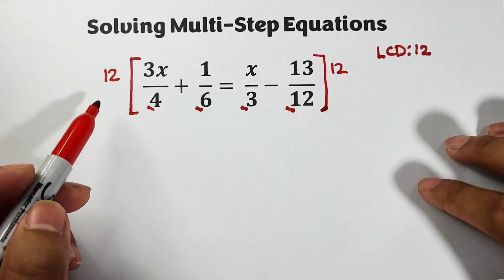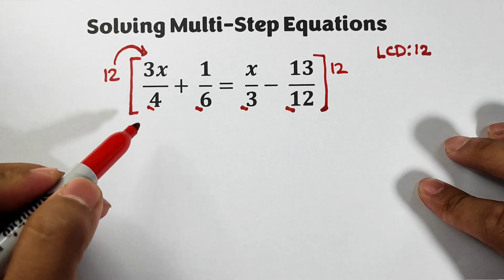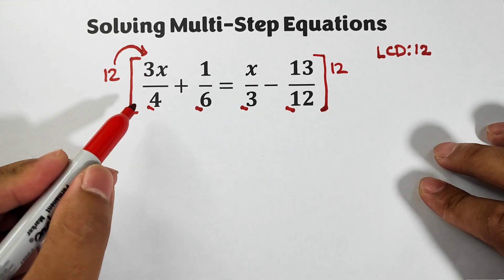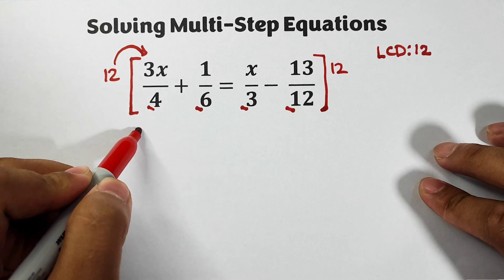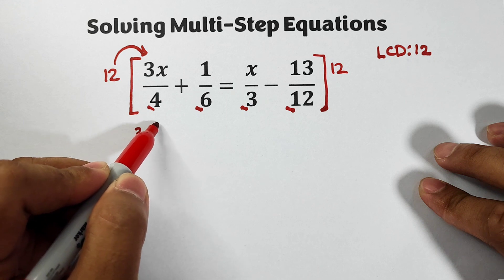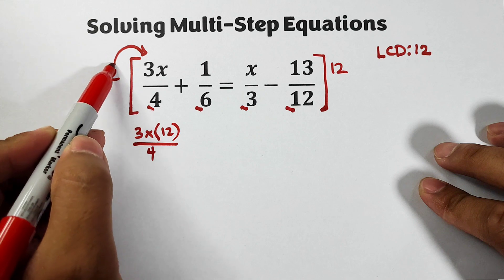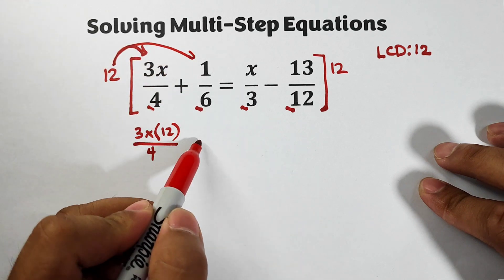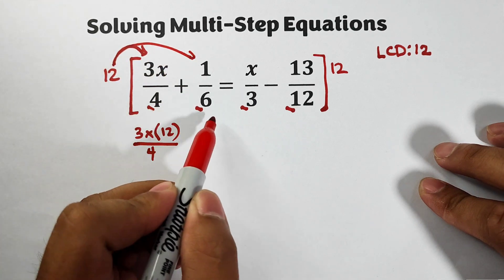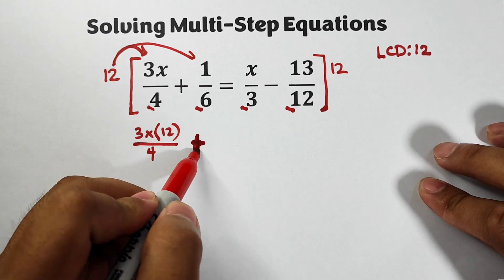So when we multiply this one by one, it will go like this. Later on we will do elimination method or cancel out. We have 3x times 12 over 4. This one multiplied by 12 is equal to 12 times 1. This is plus...